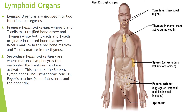Lymphoid organs are grouped into two functional categories: primary lymphoid organs and secondary lymphoid organs. Primary lymphoid organs are where B and T cells mature — bone marrow and thymus — while both B cells and T cells originate in the red bone marrow. B cells mature in the red bone marrow and T cells mature in the thymus. Secondary lymphoid organs are where matured lymphocytes first encounter their antigens and are activated. This includes the spleen, lymph nodes, MALT that forms the tonsils, Peyer's patches in the small intestine, and the appendix.